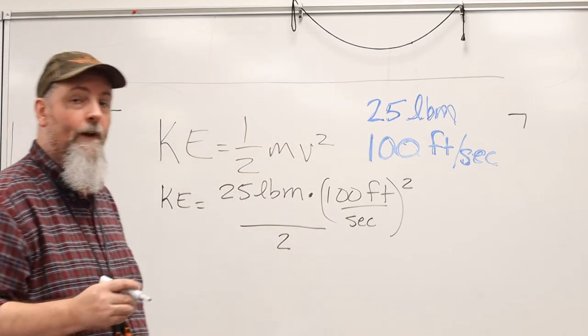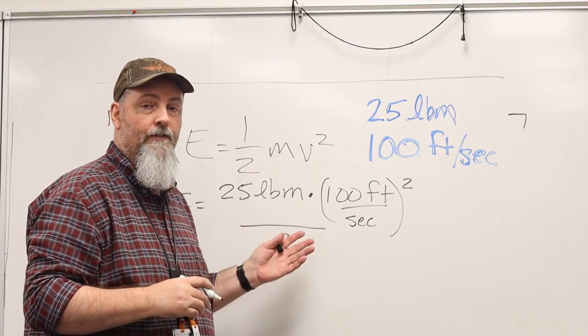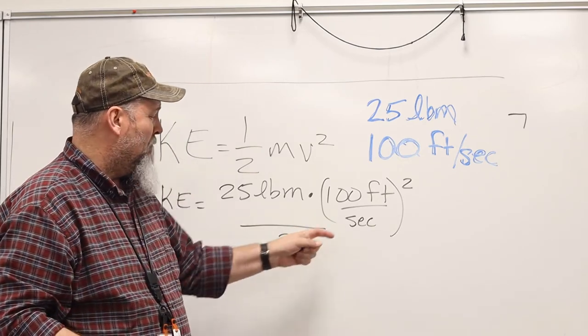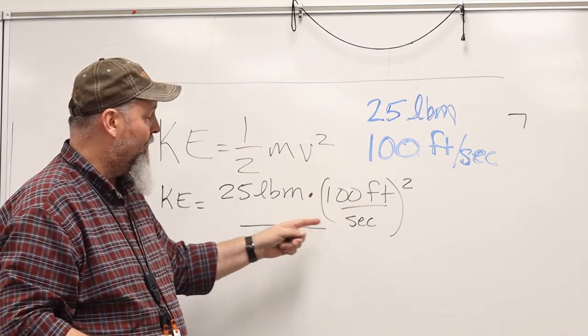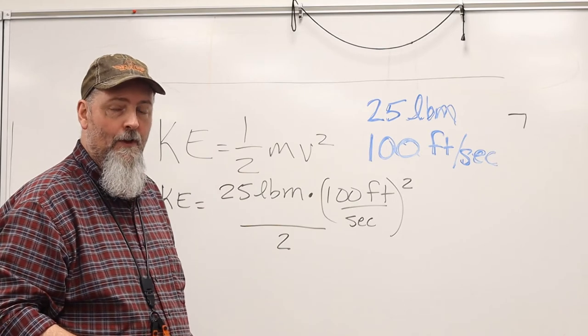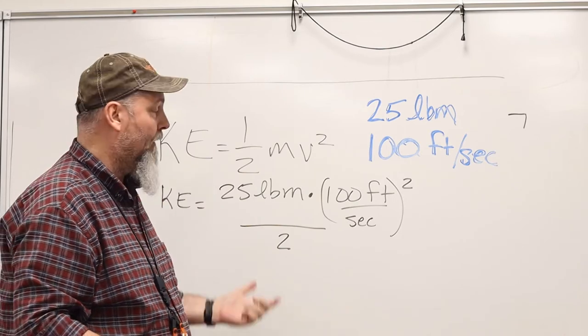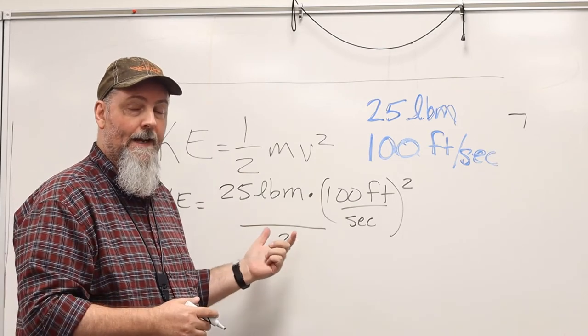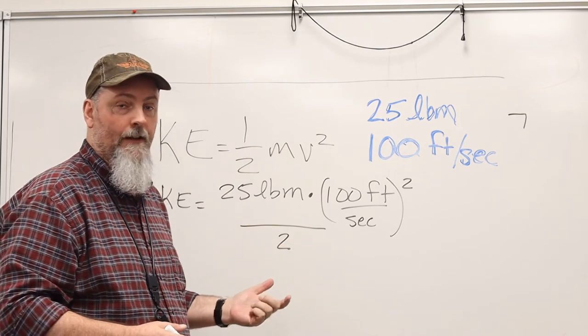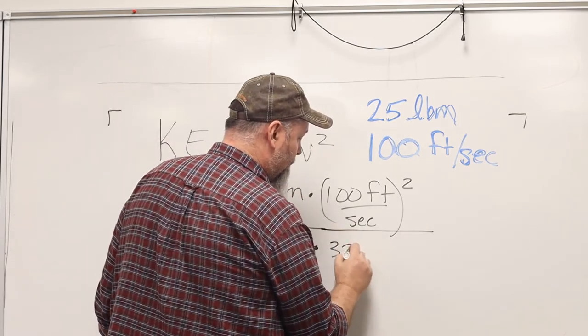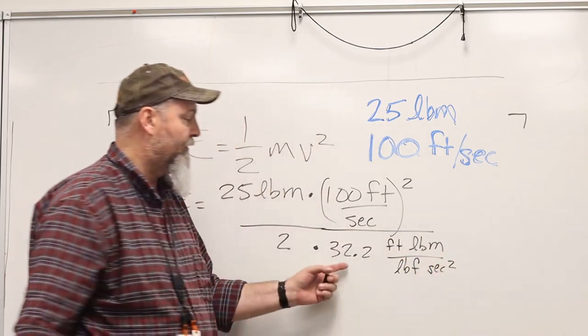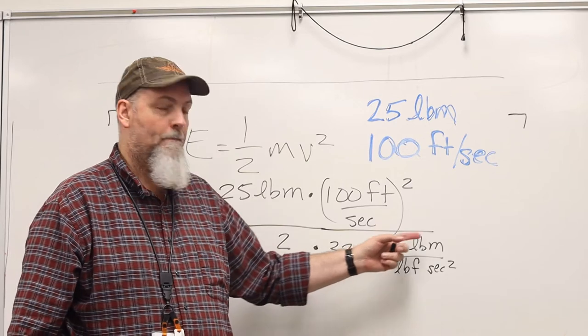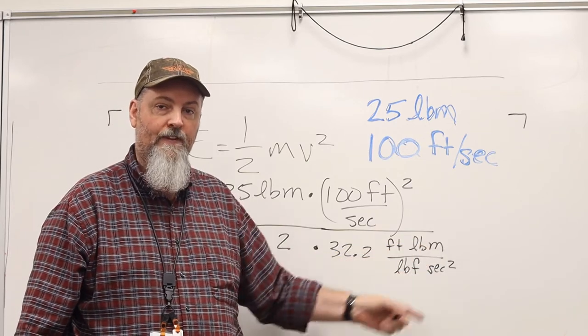Now we know that the end goal for our units is foot pounds force. But what I have right here is feet squared second squared pounds mass. We need our conversion factor. And the conversion factor, because we're talking about kinetic energy, is G sub C, which is 32.2 foot pounds mass per pound force second squared.